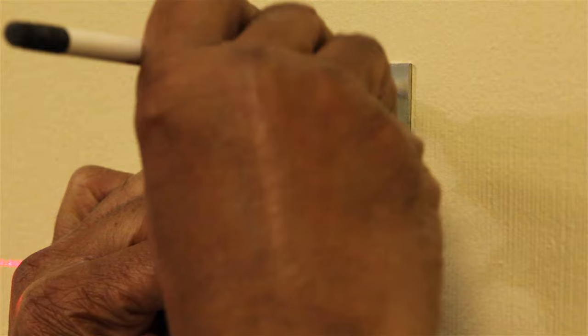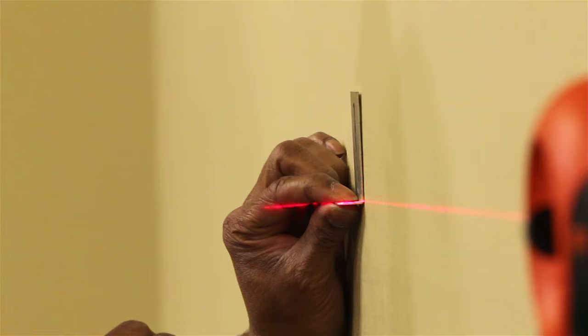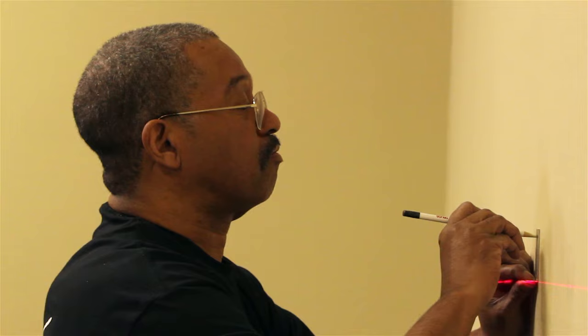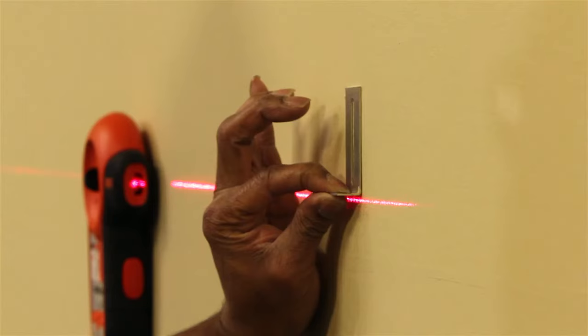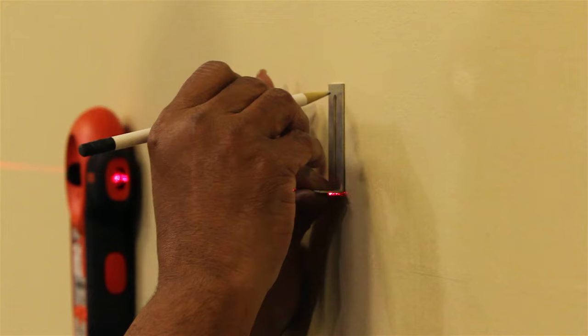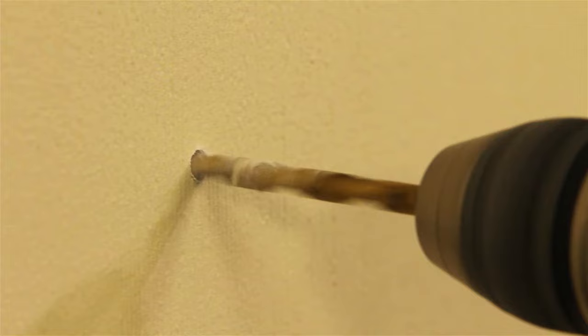Doing this will keep the clip from sliding down from the weight of the board. Repeat step two, marking as many equally spaced holes along the bottom as needed. Refer to recommended number of wall clips for the quantity of mounting clips to use.